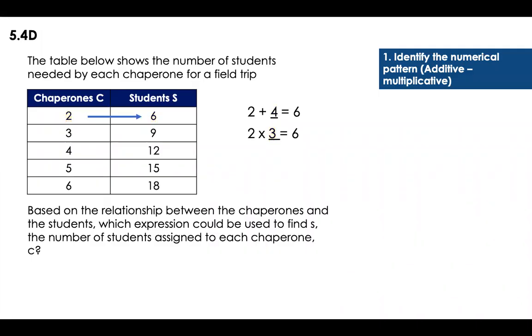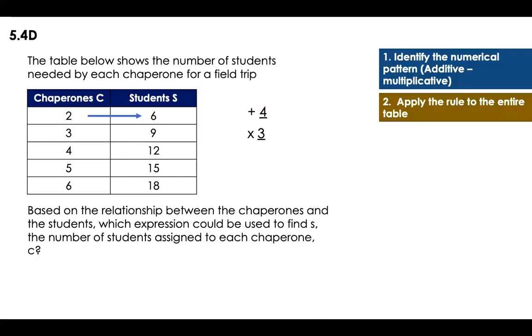Now I'm going to repeat which ones are my numerical patterns. The first one is plus four and the second one could be times three. How do I know which one of those is correct if for the first one, both of them apply?